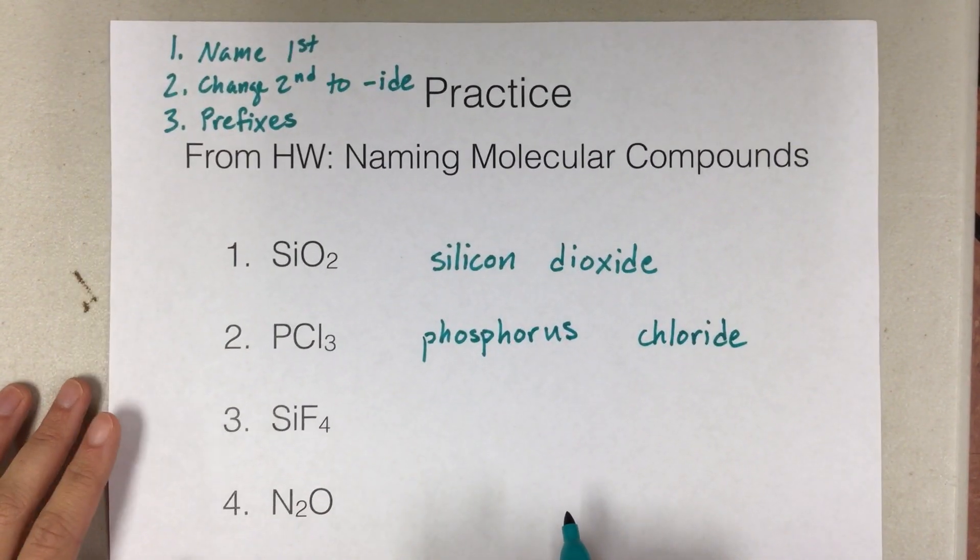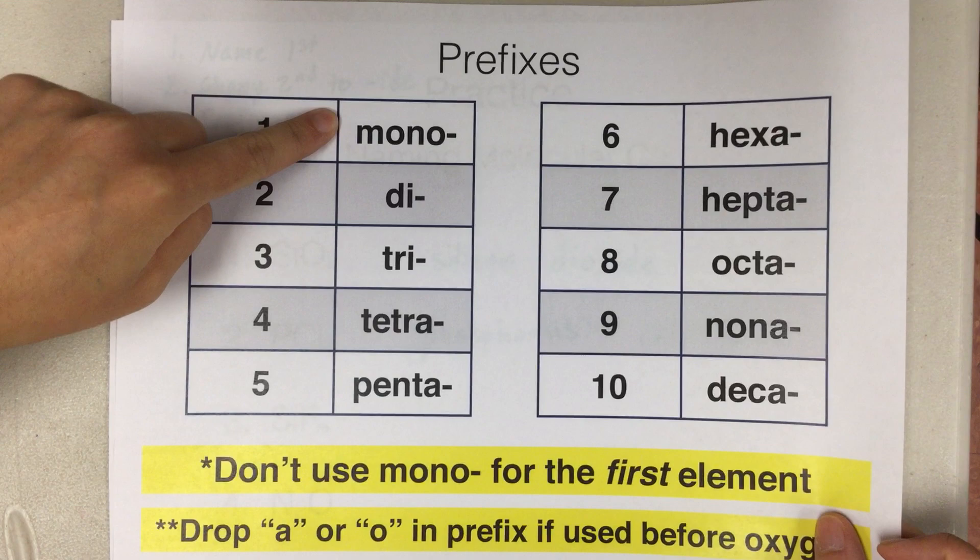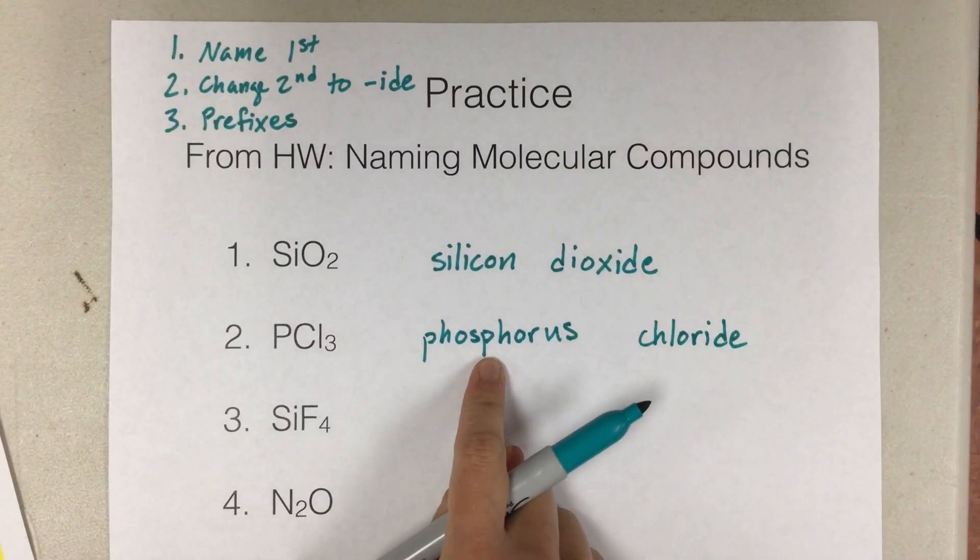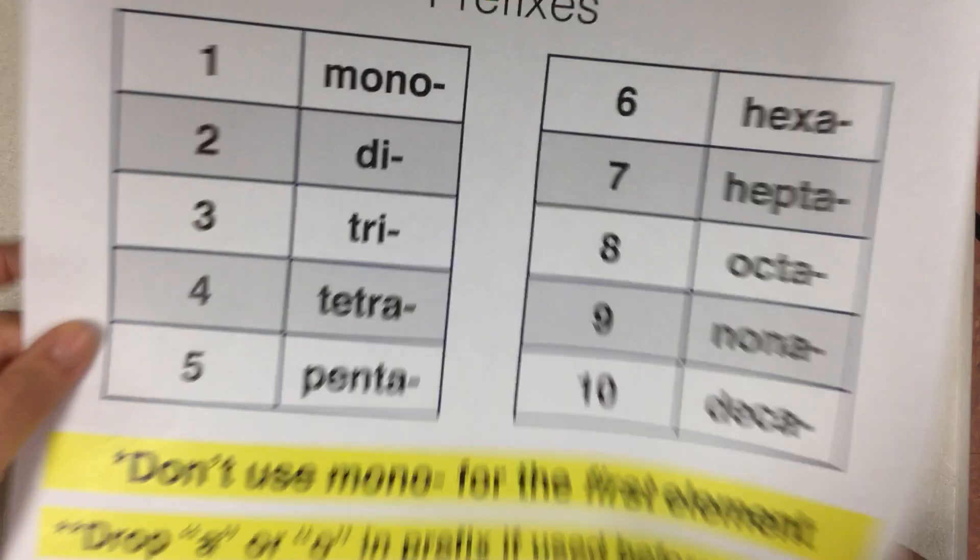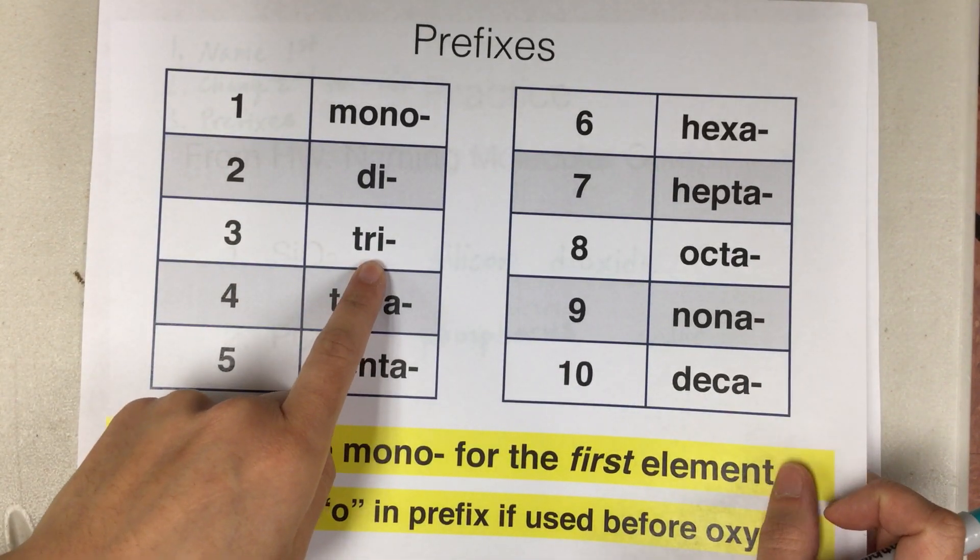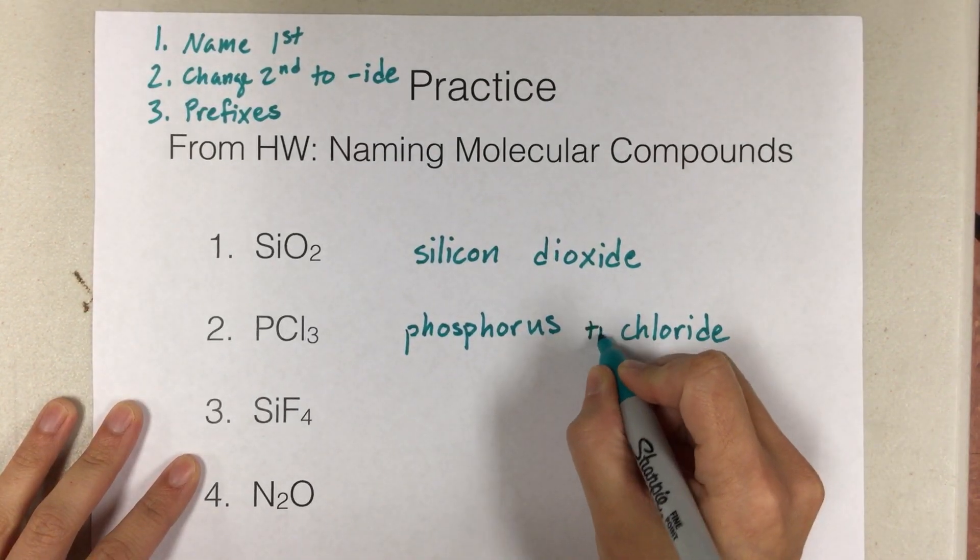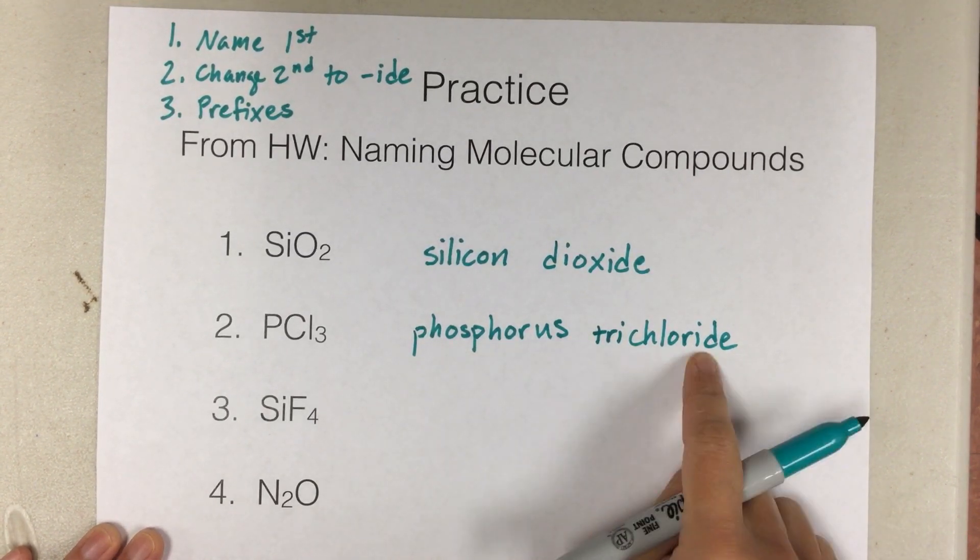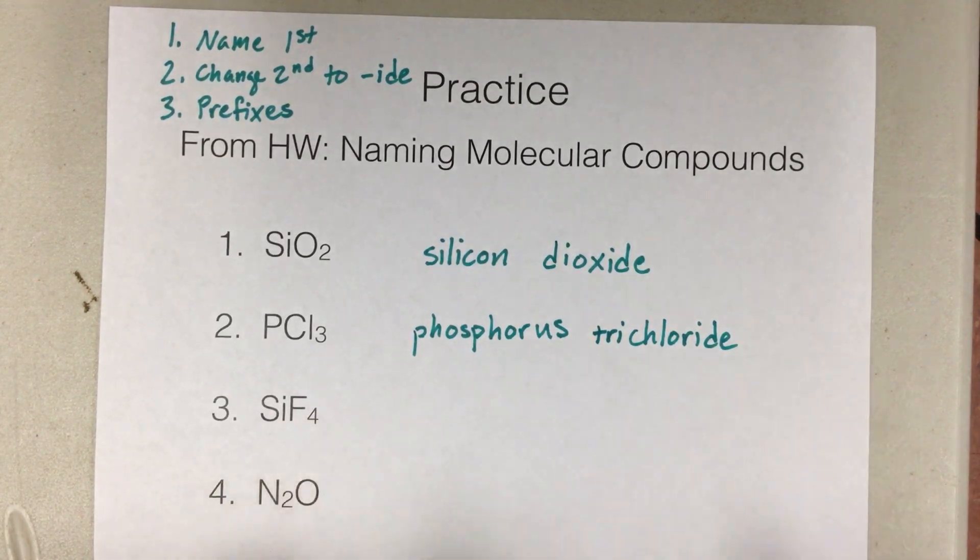All right, and then last step is to add our prefixes. Phosphorus here, we have one, which is mono. But again, remember, we don't use mono if it's the first one. So we will not put a prefix here for phosphorus since it's the first element. Second element, we have three of them. Three, tri. So we need to add tri, the prefix tri, before chloride. All right, so the name of PCl3 is phosphorus trichloride. It tells us that there's one phosphorus and three chlorides. Done.